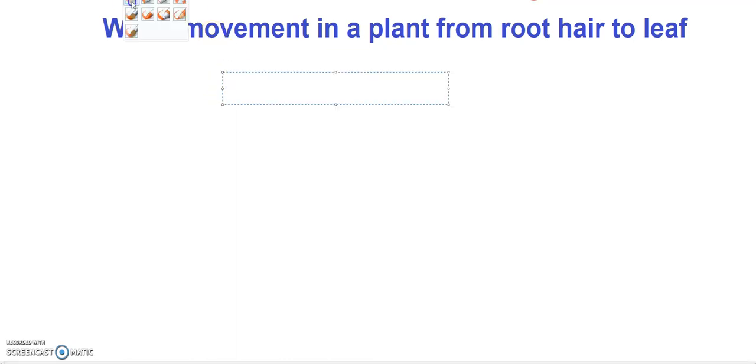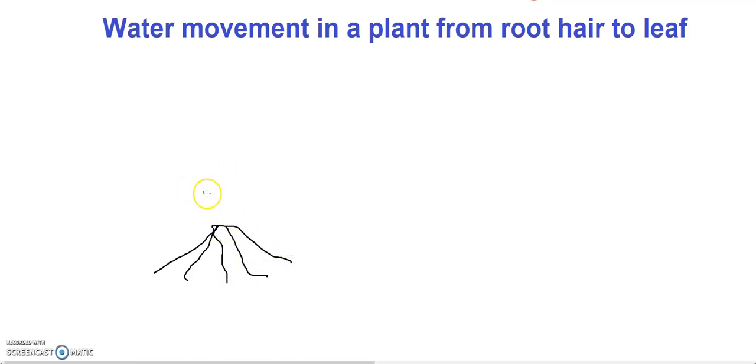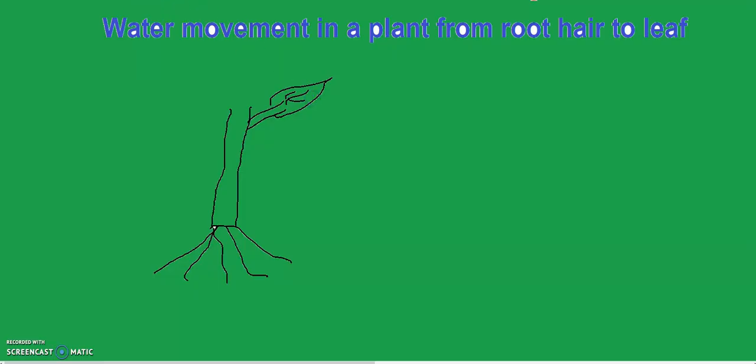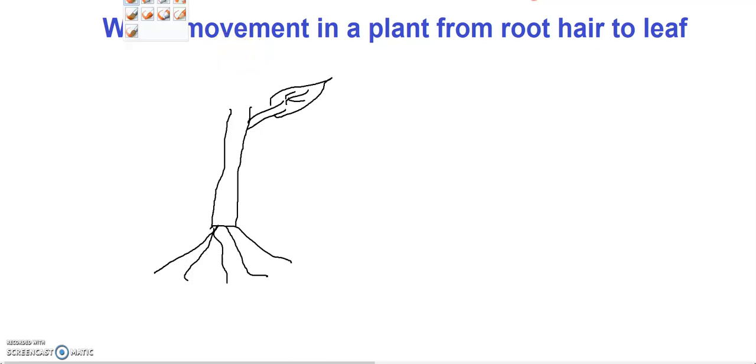First I want to draw a diagram here. Starting from the roots, these are the roots, and this is the stem, and these are the leaves. I can fill color in this. This is green color now. This is the basic rough diagram I have drawn here. These are the roots, I can use brown color for the roots, and some root hairs are also present here like this.